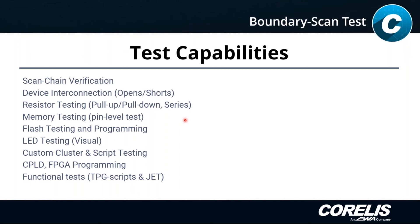We can also test for resistor population. If you have pull-up or pull-down resistors, we drive against the pull value — for a pull-up, we drive the signal low, then tri-state the boundary scan pin and expect the pull-up to pull the signal high, then sample it to confirm. We are looking for shorts and opens on pull-up and pull-down resistors. For a series resistor, we drive one side and expect that value to appear on the other side — it's a logic-only test that determines presence, not resistor value.